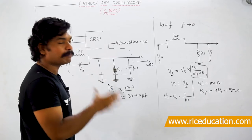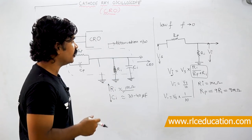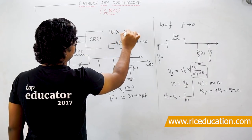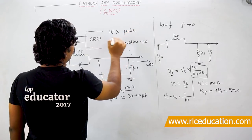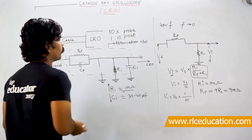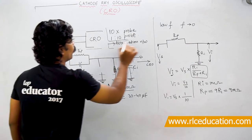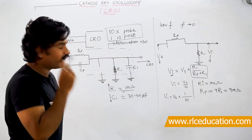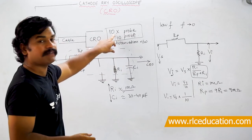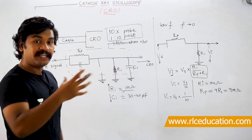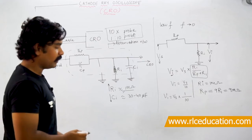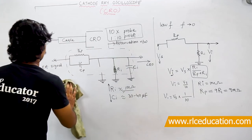A probe that offers 10 times attenuation is called a 10x probe, also called a 1:10 probe or 10 times probe. These are the commercial names; in problems it will be stated as a 10x probe, meaning it attenuates the input signal by 10 times. This is the analysis under low frequency conditions.